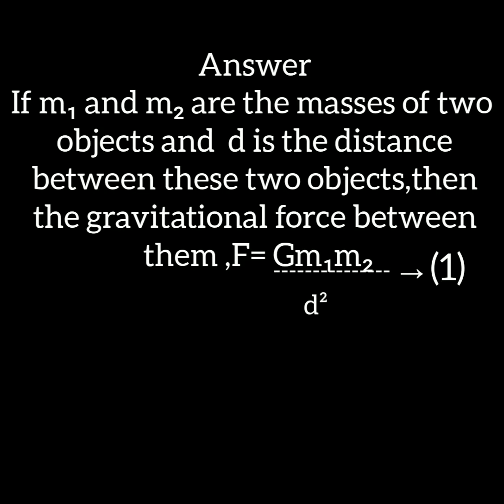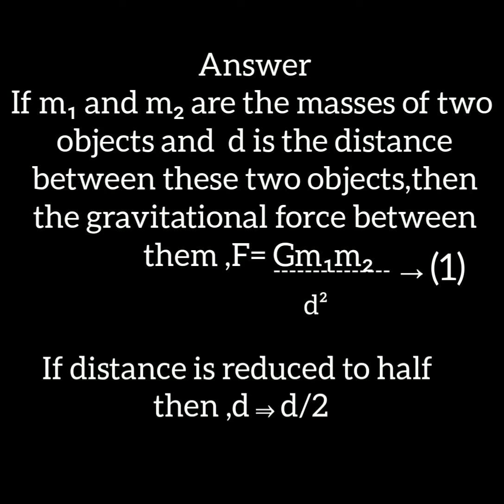Now the question is: how does the force of gravitation between these two objects change when the distance is reduced to half? If the distance is reduced to half, then D becomes D by 2.